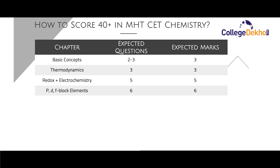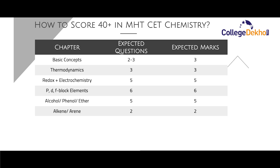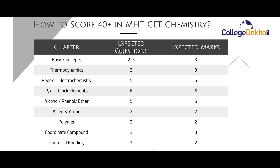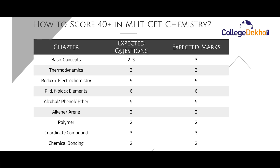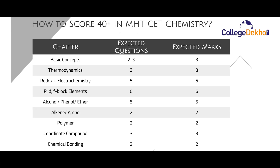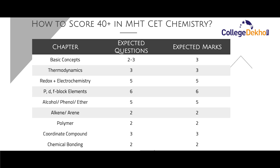For Redox and Electrochemistry, you can expect 5 questions for 5 marks. For P and D block elements, you can expect 6 questions for 6 marks. For Alcohol, Phenol, and Ether, you can expect 5 questions for 5 marks. For Alkene and Arene, you can expect 2 questions for 2 marks. For Polymers, you can expect 2 questions for 2 marks. For Coordinate Compounds, you can expect 3 questions for 3 marks, and for Chemical Bonding, you can expect 2 questions for 2 marks. Hence, the above topics carry a total of 30 marks in MHT CET.